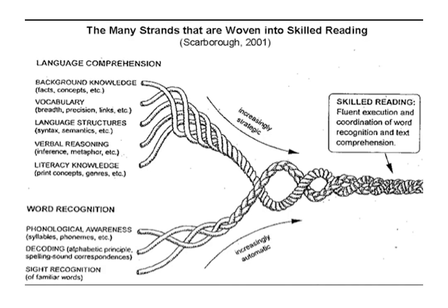Then there's verbal reasoning — do students have the ability to make inferences, meaningful predictions, and problem solve? That's what skilled readers do. Metaphor and idiomatic expressions are very culturally based and learned by exposure — you have to be in the right culture. Anyone who uses metaphor to identify a disability without knowing whether the child has been exposed to those idiomatic expressions is using a questionable approach. Finally, literacy knowledge — print concepts, genre — is also taught.